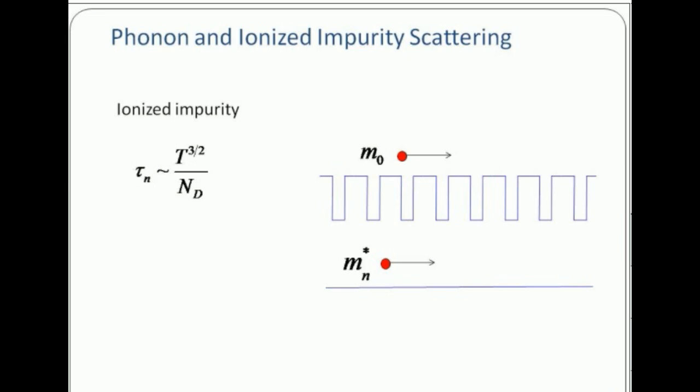That is why this T^(3/2) comes in. It has to do with screening with other electrons around the positive core that modifies the scattering.